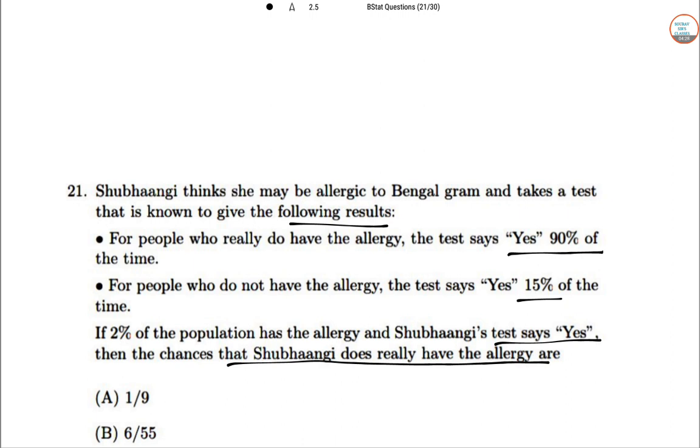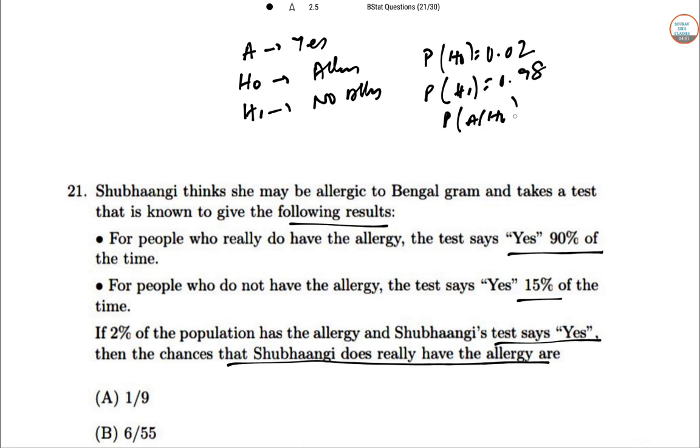Let A = yes. H₀ is Shubhangi has allergy, H₁ is no allergy. So P(H₀) = 0.02, P(H₁) = 0.98. P(A|H₀) = 0.9, P(A|H₁) = 0.15.